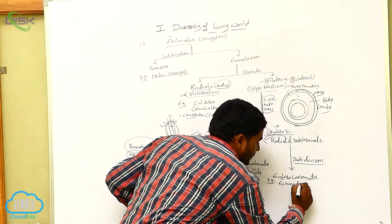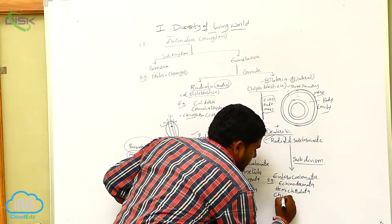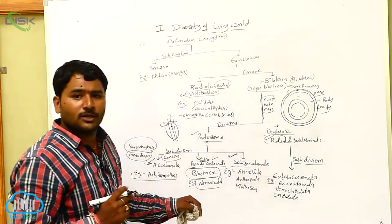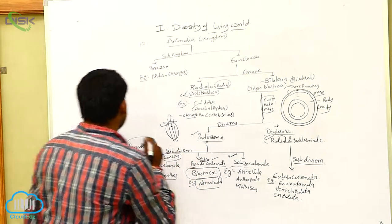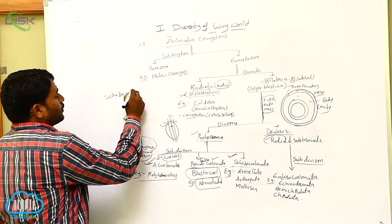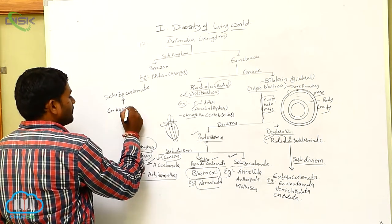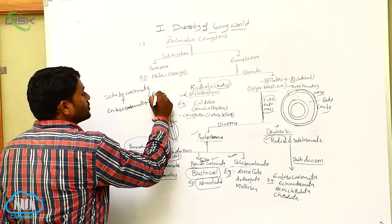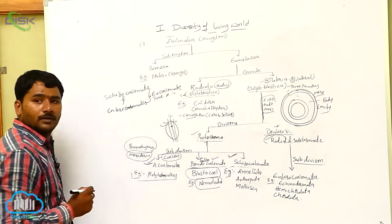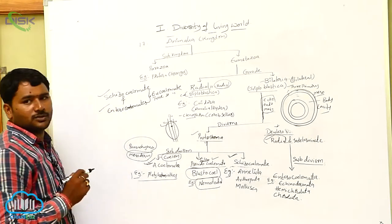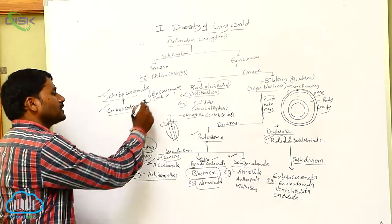Examples of Enterocoelomata: Echinodermata, Hemichordata, and Chordata. Schizocoelmates and Enterocoelmates are also known as true coelomates or Eucoelomata. Schizocoelomata has a real body cavity formed by splitting of mesoderm, while Enterocoelomata has a real body cavity formed by development of pouches. They differ in method but both are true coelomates.